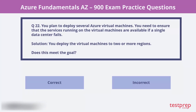Question 22. You plan to deploy several Azure virtual machines. You need to ensure that the services running on the virtual machines are available if a single data center fails. Solution: You deploy the virtual machines to two or more regions. Does this meet the goal? No, it will not.